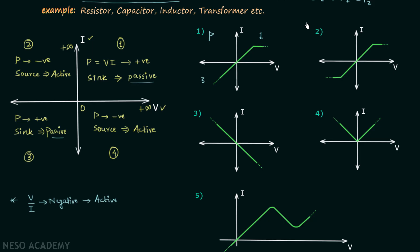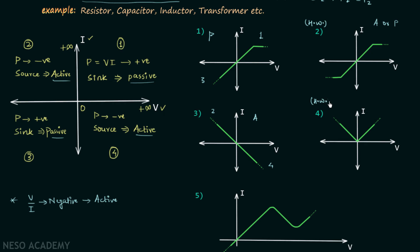The second example is homework: determine whether the element having that VI curve is active or passive. In the third example, one portion of the curve lies in the second quadrant and another portion lies in the fourth quadrant. Since the element is active in both those quadrants, this is the curve of an active element.